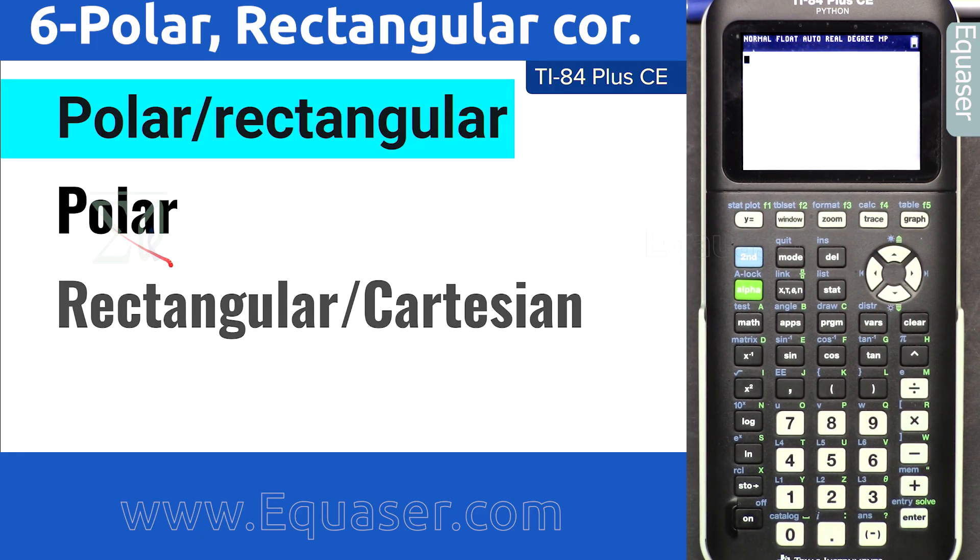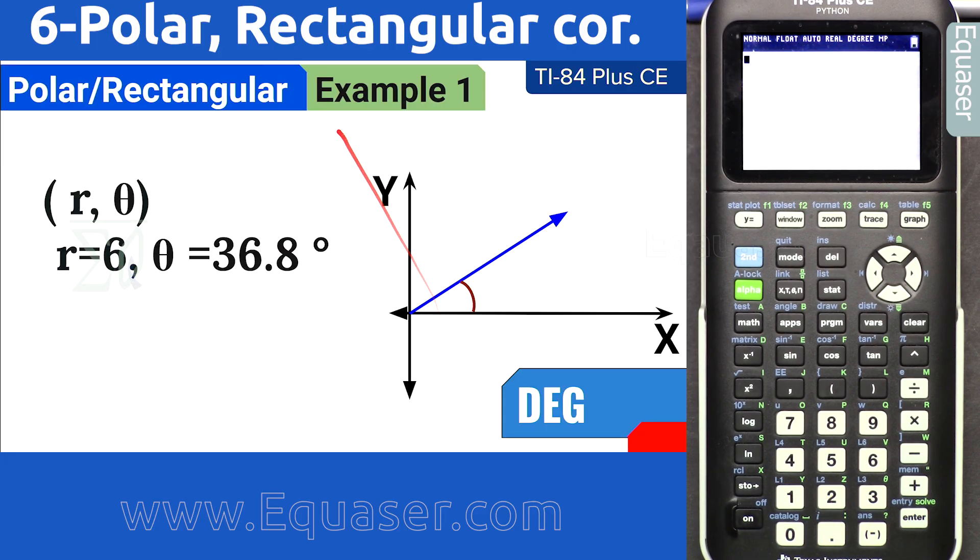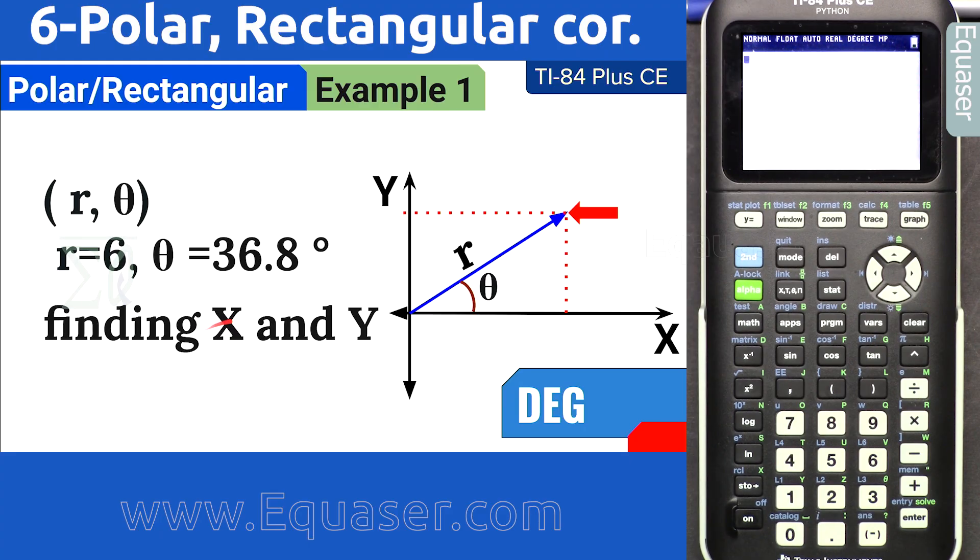So we have polar and rectangular. Some schools or books use the term Cartesian. Now, example one: we have r and we have theta, we want to convert it to rectangular. We want to find the coordinate of this point, which is x and y.